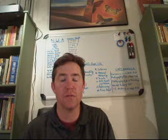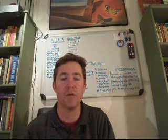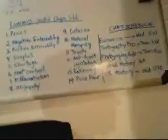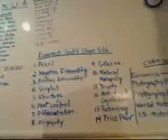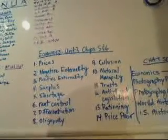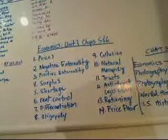The topics and key terms you'll need to review from chapters 5 and 6 are: prices, negative externality, positive externality, surplus, shortage, rent control, differentiation, oligopoly, collusion, neutral monopoly, trusts, antitrust legislation, rationing, and price floor. Pay special attention to these.